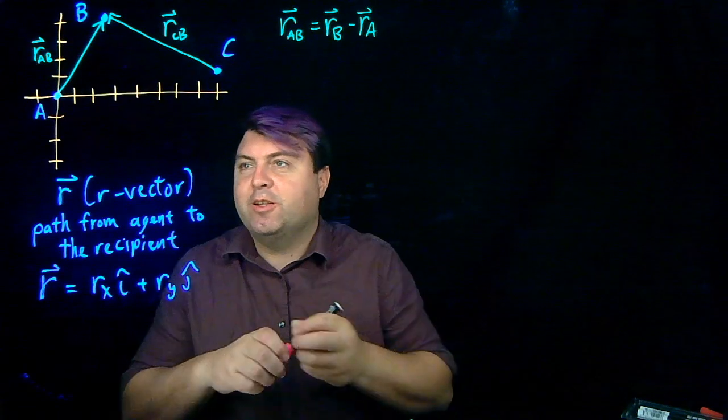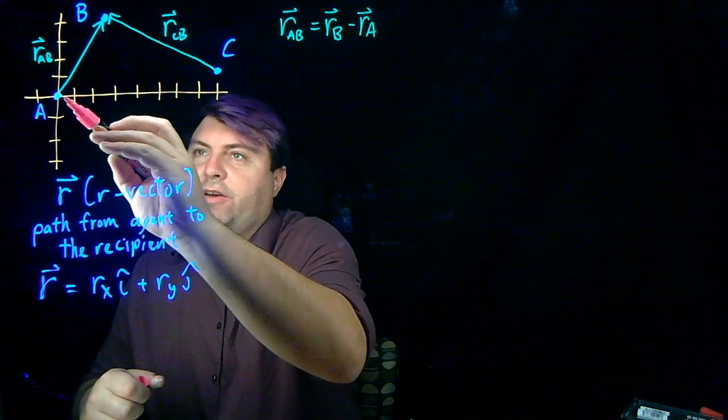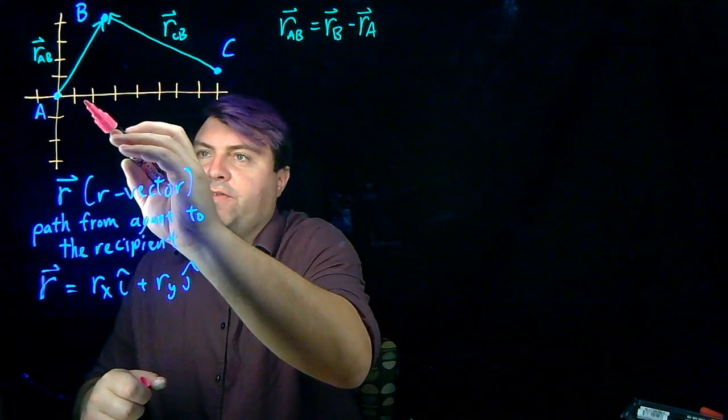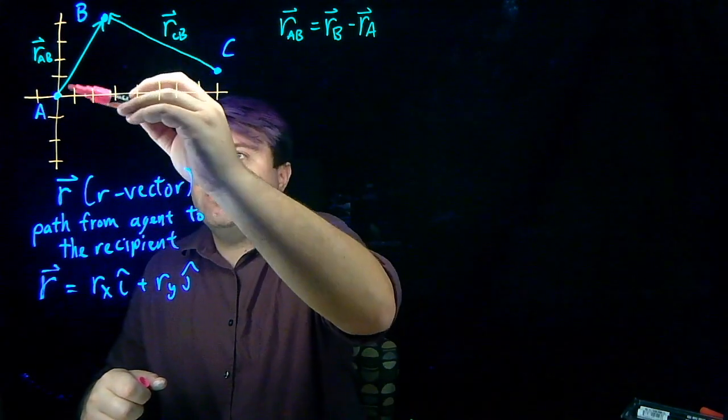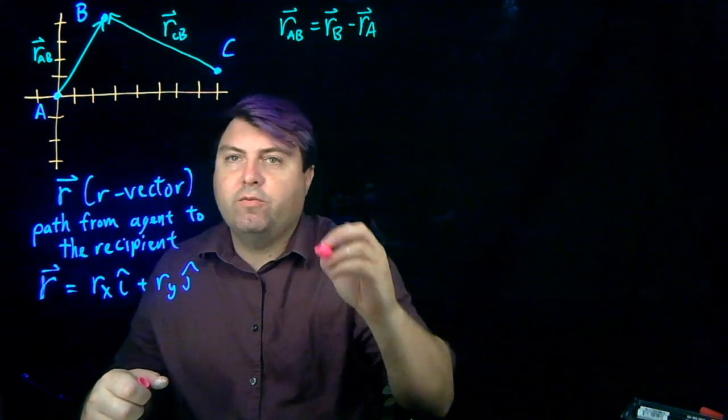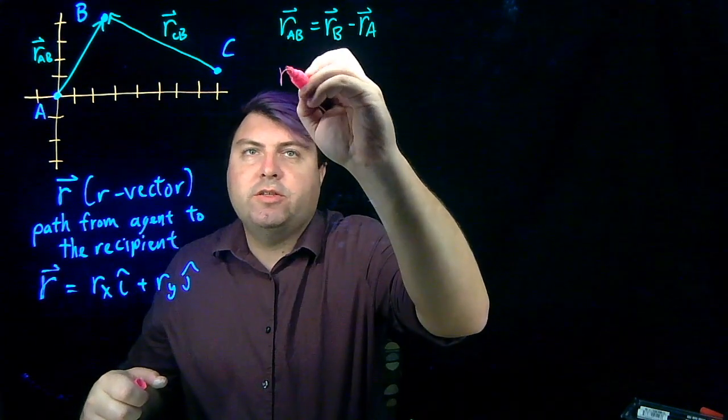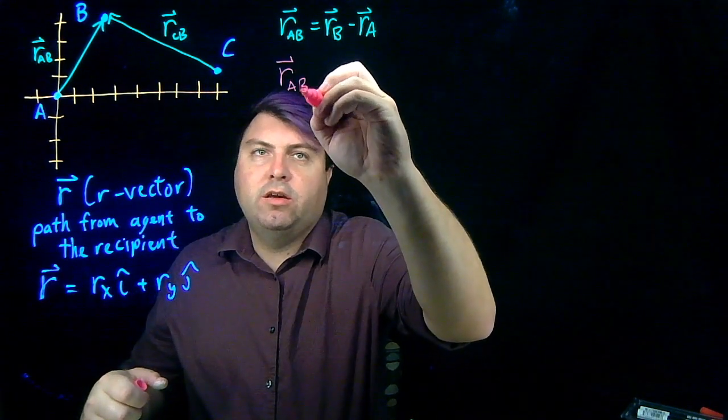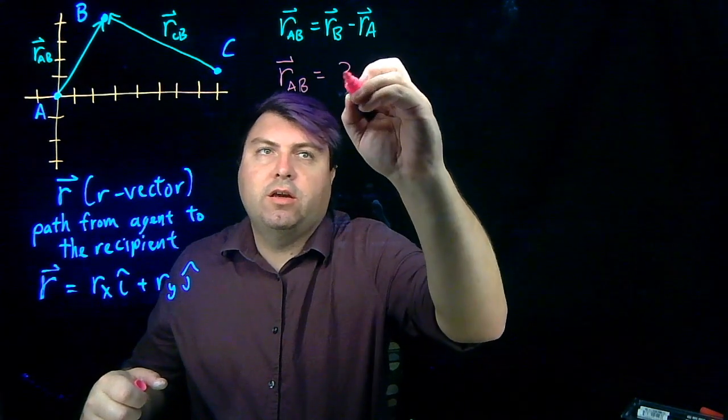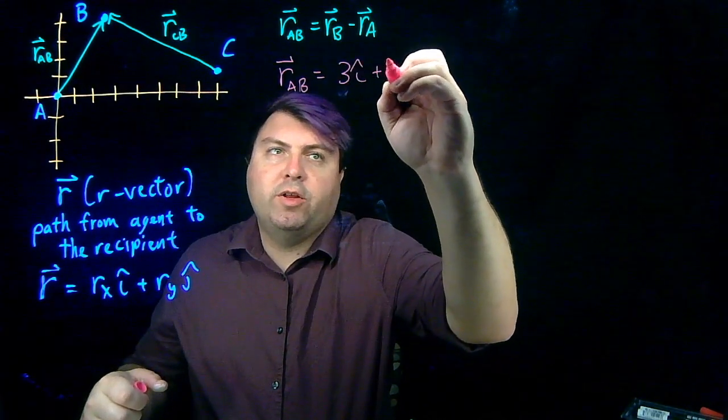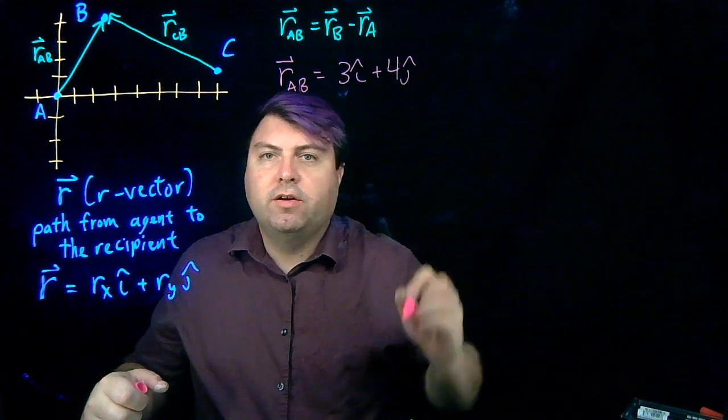Counting might be a little bit easier, a little bit less intimidating here. In order to get from A to B in the x-direction, I have to go 3 units in the x-direction, and I have to go 4 units in the y-direction. So I can also say that r-AB is just 3 i-hat plus 4 j-hat.